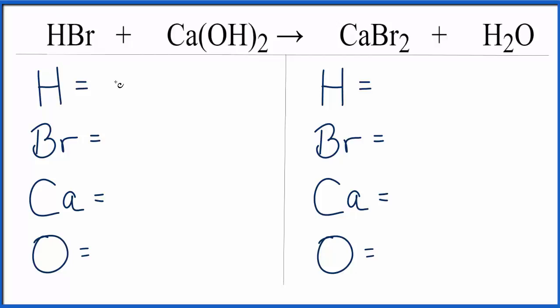We have hydrogen, one of those, plus we have one here. And this two, that applies to everything in here. So one times two is two. So we have one plus two hydrogens. That gives us three hydrogens.